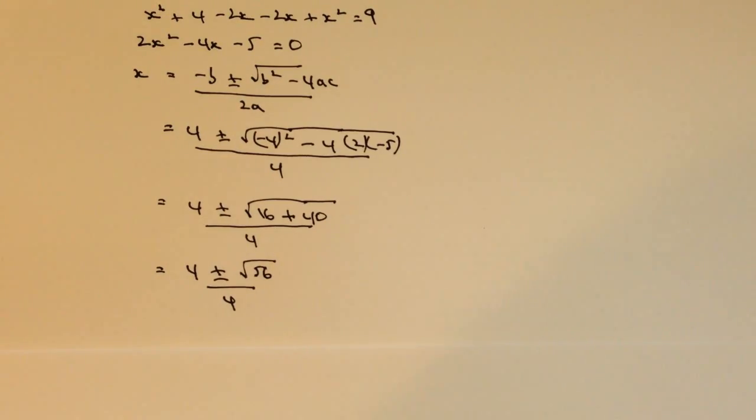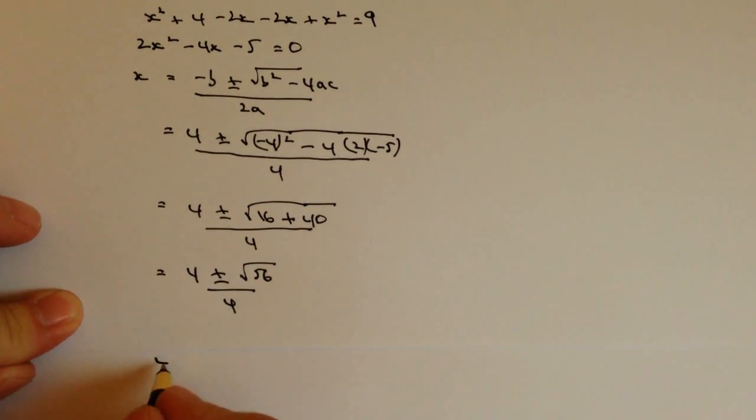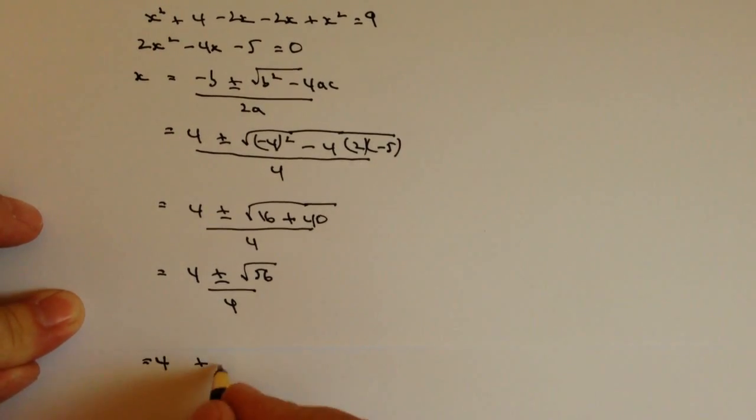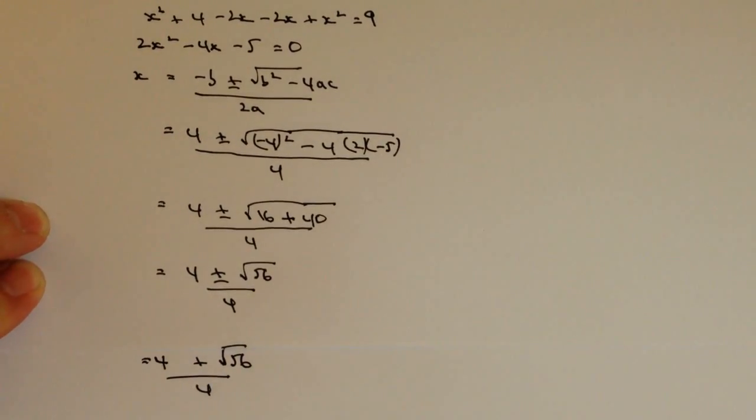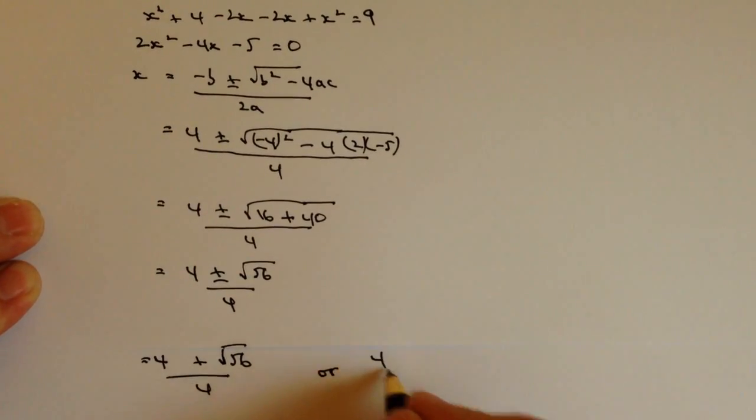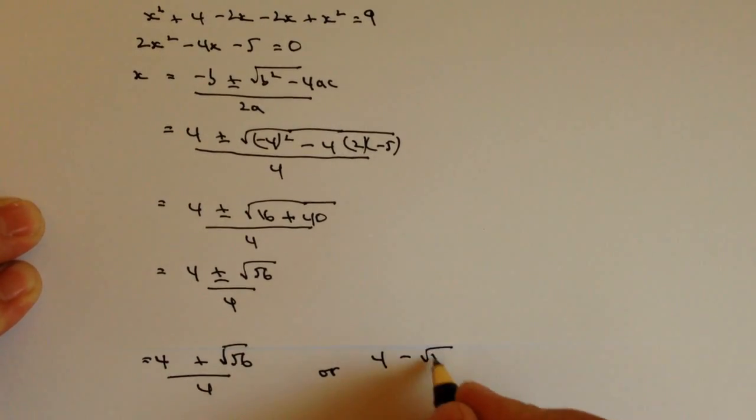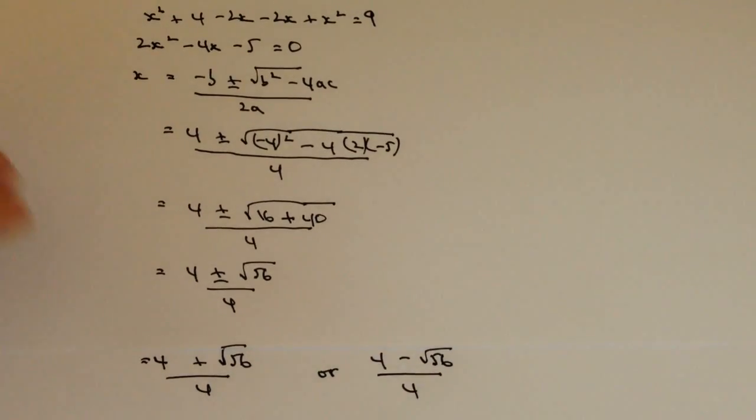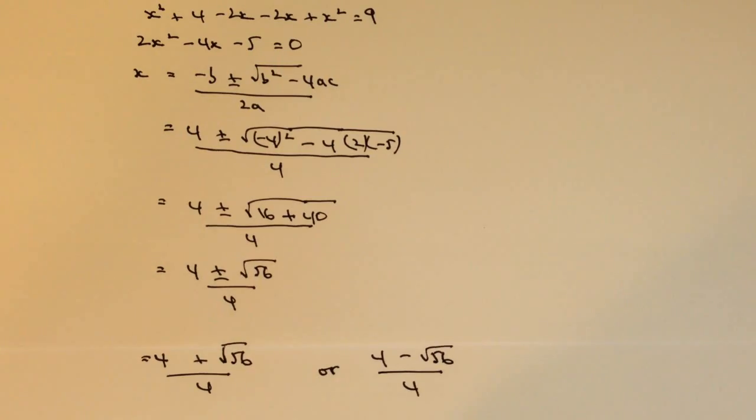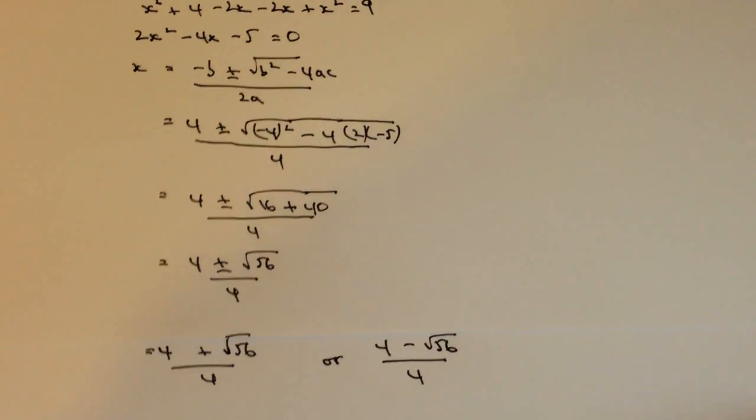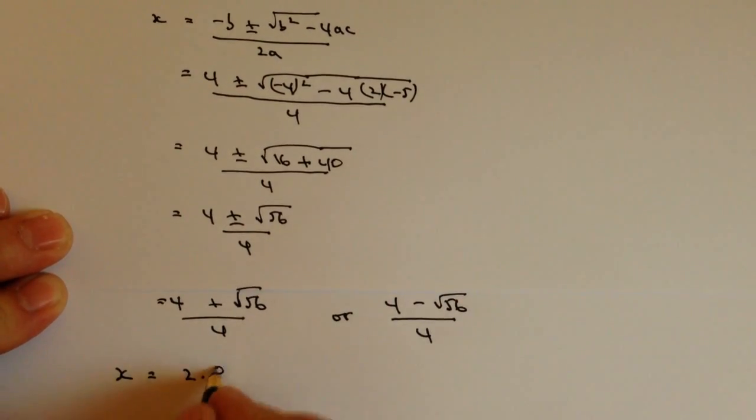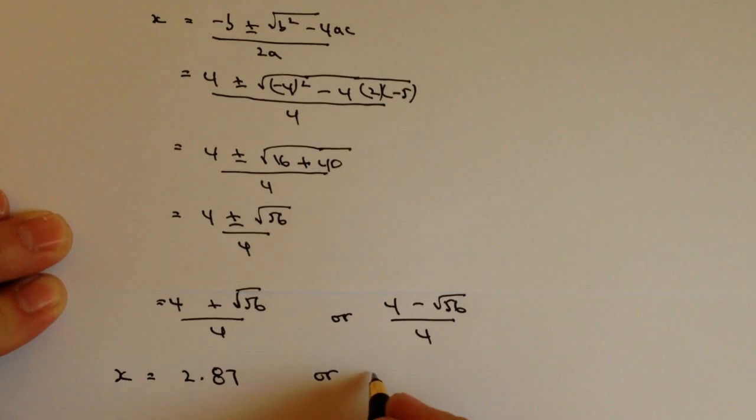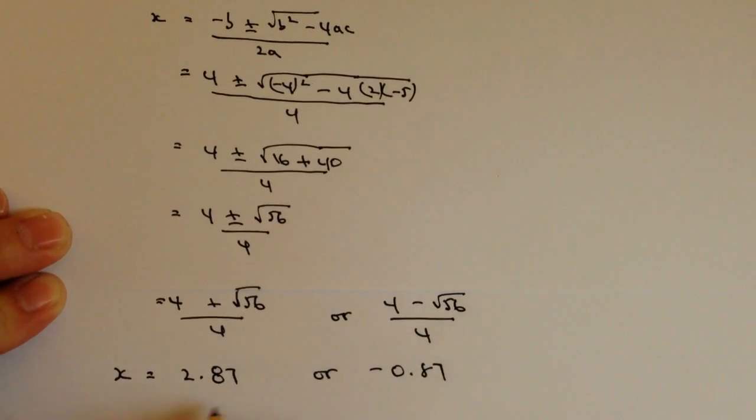And actually, that's now going to give me my two solutions. So my two solutions are going to be equals 4 plus the square root of 56 over 4, or 4 minus the square root of 56, all divided by 4. I hope that's all right for you. And then basically, I would just put that straight into a calculator. If I put that straight into a calculator, I get the solution that x equals 4 plus 56 over 4 is 2.87, or minus 0.87. And those are my two solutions.